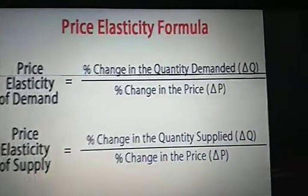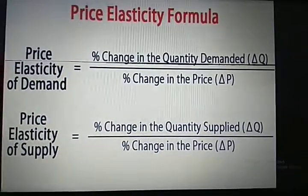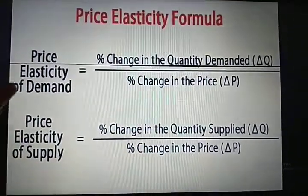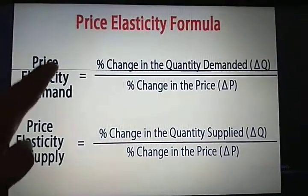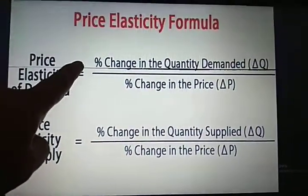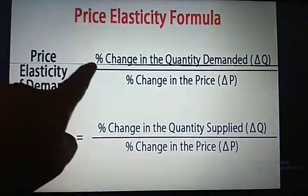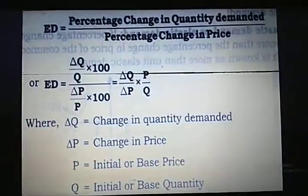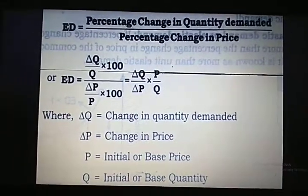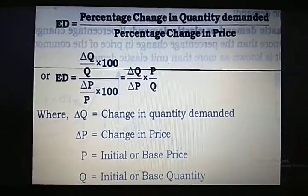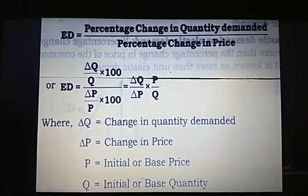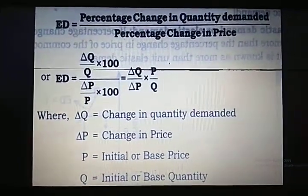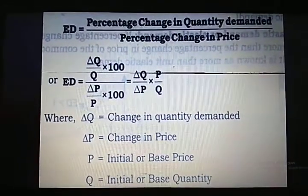As you can see on the screen, the different formulas related to elasticity of demand. The first one is the percentage method formula which I already explained yesterday. The formula is percentage change in quantity demanded upon percentage change in price. I am repeating the formula so that you remember it and when I explain the numerical part, things are very clear to you.